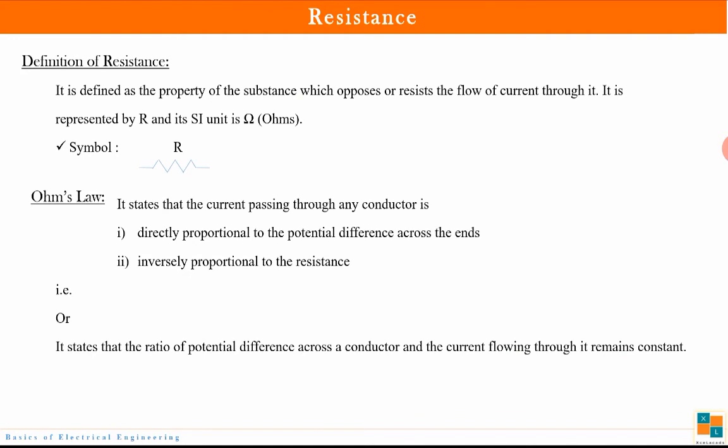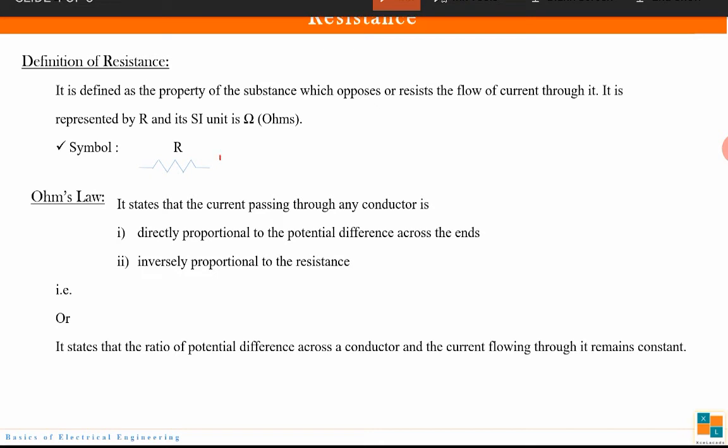Now let us understand what resistance is. These terminologies we are going to use again and again. Basically, resistance is a property which opposes or resists the flow of current. This is how we represent resistance — the symbol is shown — and the SI unit of resistance is ohms.